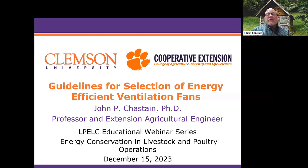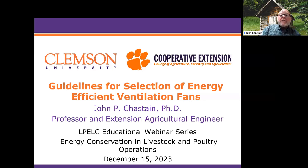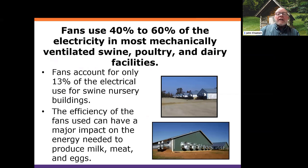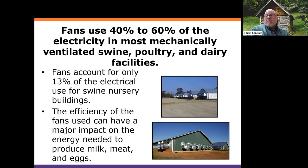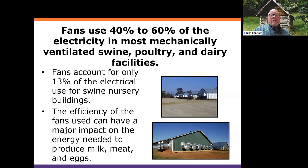I want to focus on guidelines for selection of energy efficient ventilation fans — specifically ventilation fans, not mixing fans, because there are different criteria. As Brad showed, a lot of the electricity used on swine, poultry, and dairy facilities comes from fans. The big exception is the amount of fan energy required for small swine like a swine nursery. So in most cases, the efficiency of the fans we use on the farm can have a big impact on the energy we need to produce milk, meat, and eggs.